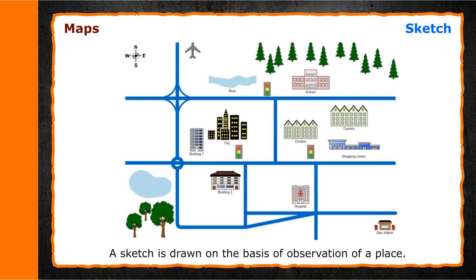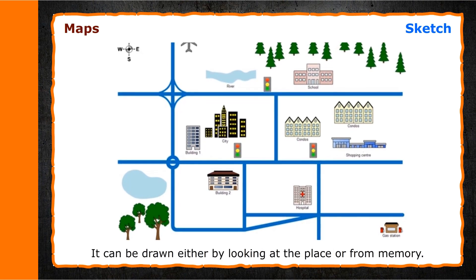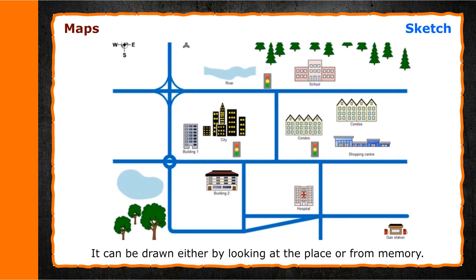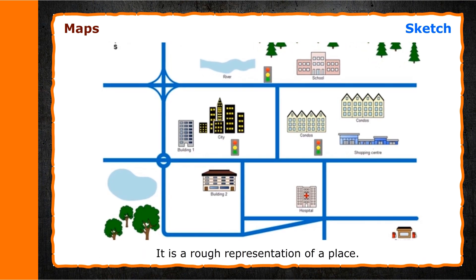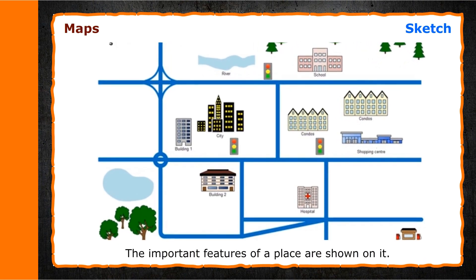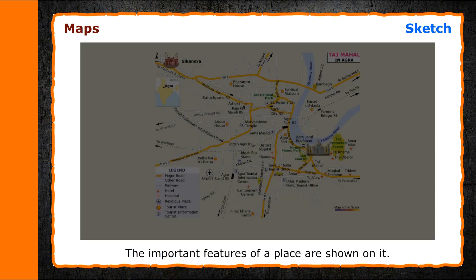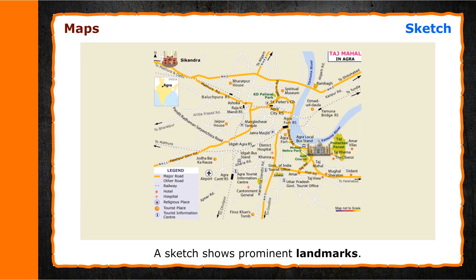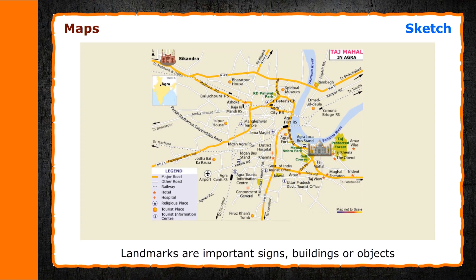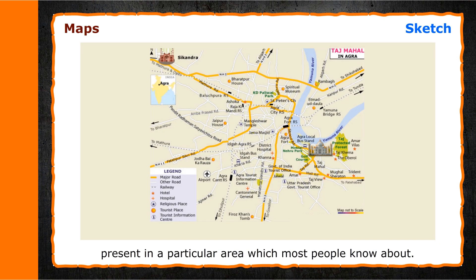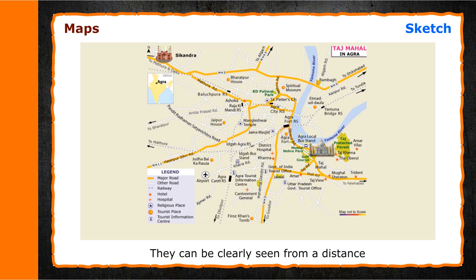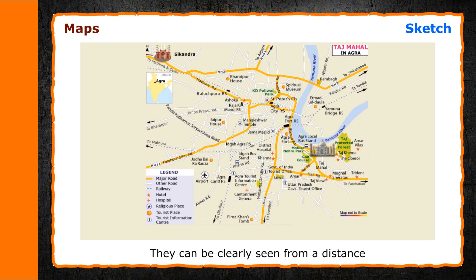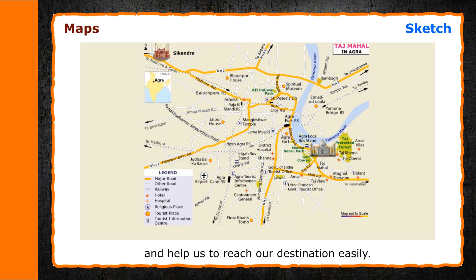Sketch. A sketch is drawn on the basis of observation of a place. It can be drawn either by looking at the place or from memory. It is a rough representation of a place, and the important features of a place are shown on it. A sketch shows prominent landmarks. Landmarks are important signs, buildings or objects present in a particular area which most people know about.